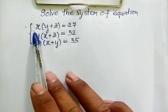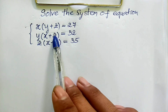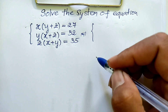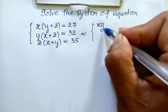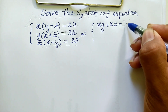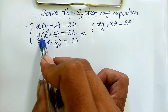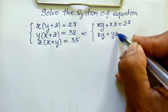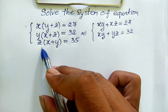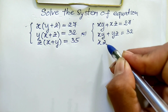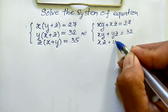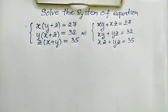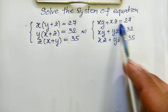For each equation I can multiply it out. This gives us a new system: h times y plus h times z equals 27, then h times y plus y times z equals 32, and h times z plus y times z equals 35.